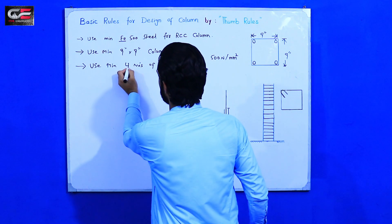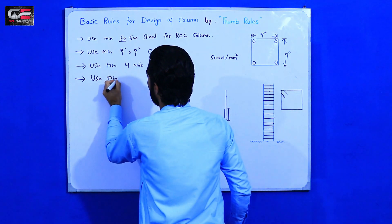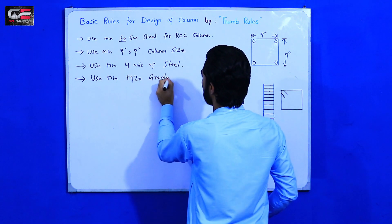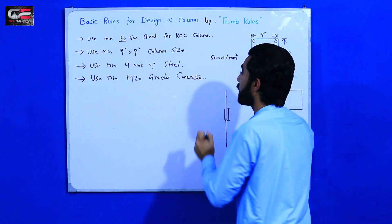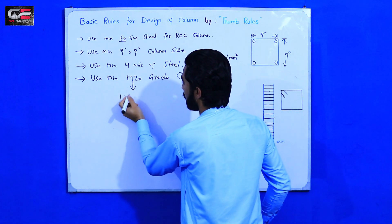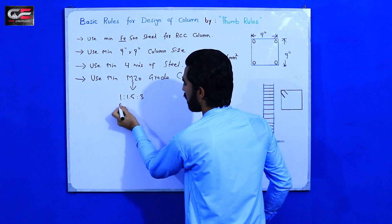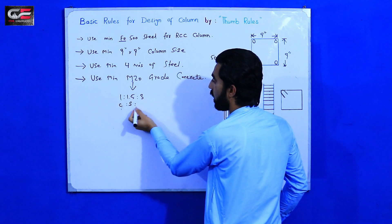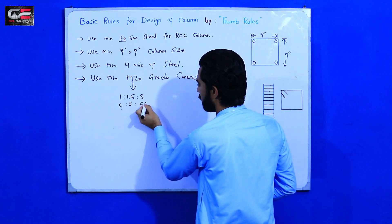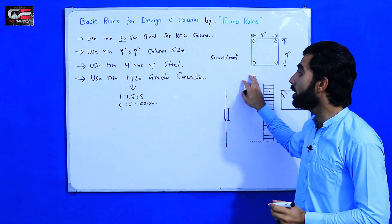Now for concrete: use a minimum M20 grade concrete for RCC columns by thumb rule. The ratio of M20 grade concrete is 1:1.5:3, where 1 is cement, 1.5 is sand or fine aggregate, and 3 is coarse aggregate or crush. This is the minimum M20 grade concrete that should be used in RCC columns.